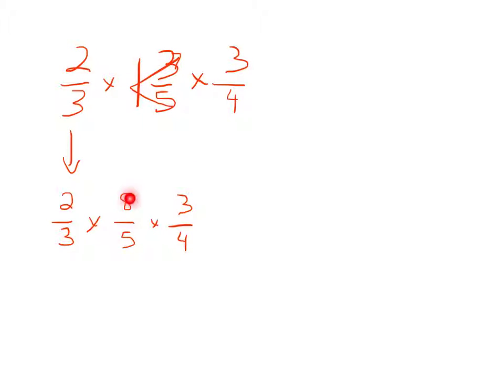Now, again, we look diagonally to reduce. What's interesting with three of them is you can look diagonally far away from each other. So here, this three will cancel out this three, and they will both become a one.